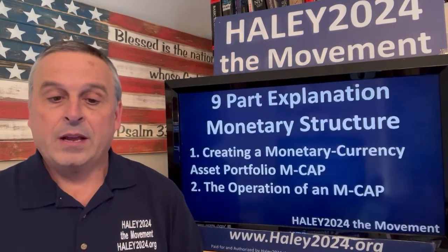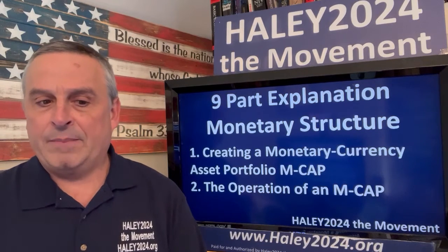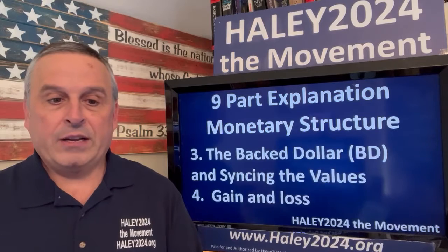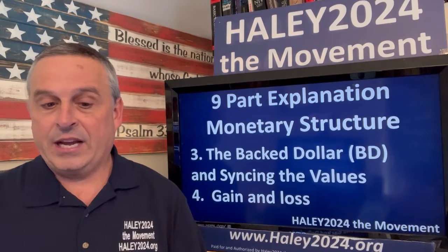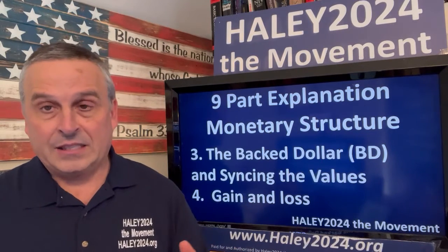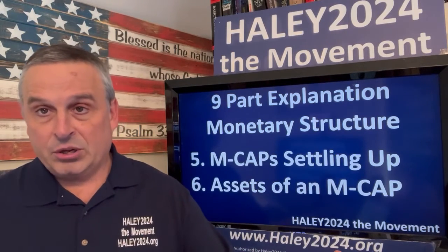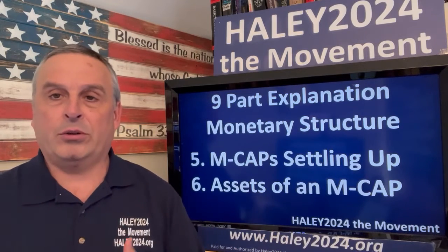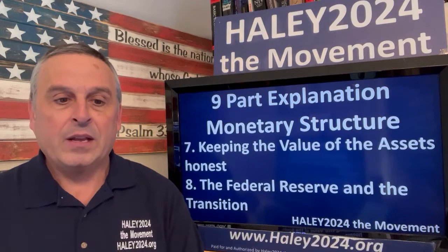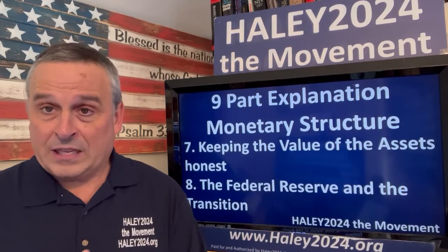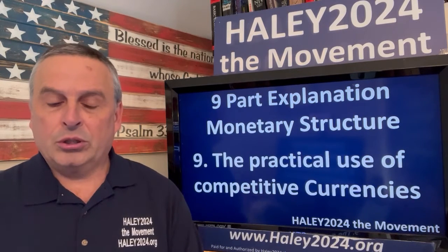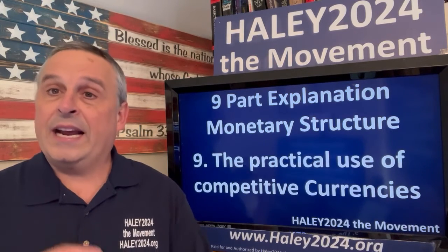Competitive governance — all of government is going to change dramatically, but the currency is going to have a unique feature. Nine-part explanation: first, creating a Monetary Currency Asset Portfolio, called an MCAP. Second, operations of an MCAP. Third, the backed dollar — standardized units and how to synchronize all the values together. Fourth, gain and loss — because we back it up, we'll have gains and losses. Fifth, MCAP settling up. Sixth, assets of an MCAP — stocks, bonds, precious metals, a lot of different things. Seventh, keeping the value of assets honest. Eighth, the Federal Reserve and the transition. Ninth, the practical use of competitive currencies, wrapping it all up.